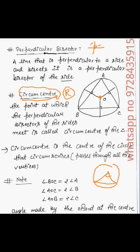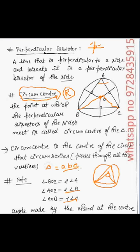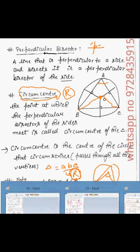There is a very important property: the angle made by any chord at the center is double the angle made at the circumference. So angle BOC = 2 × angle A, and angle AOC = 2 × angle B. Also, the area of the triangle = (ABC) / (4R), where A, B, C are the sides and R is the circumradius.